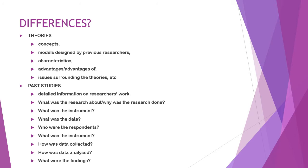I also discuss advantages, disadvantages, and issues surrounding the theories. Where do I get these theories? I can get them from books or from journal articles. There are several categories of journal articles — the common type reports research, where in the abstract you can see methodology, population, sample, and how the researcher collected data.